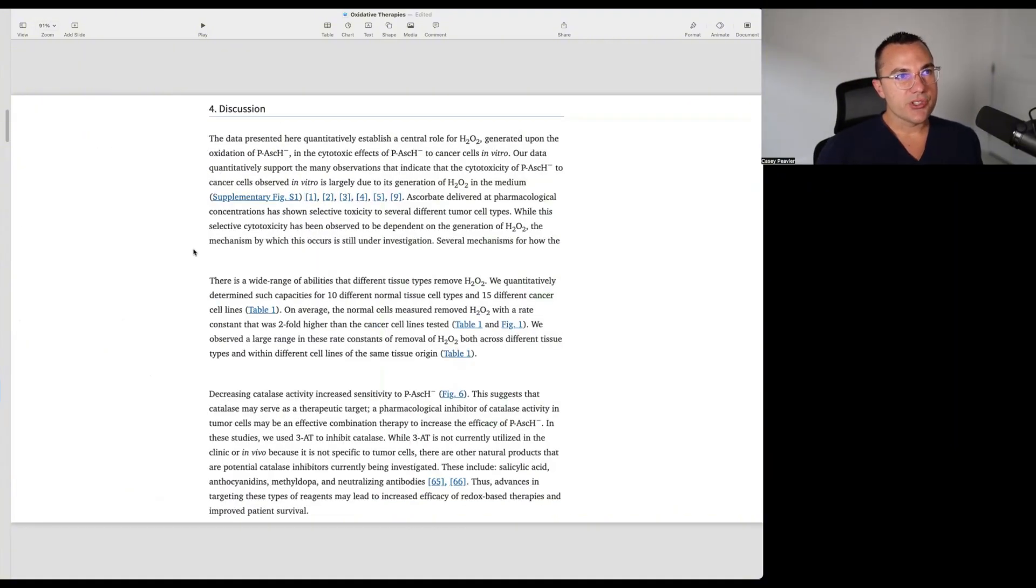Discussion. The data presented here quantitatively established the central role for hydrogen peroxide generated upon oxidation of ascorbic acid in the cytotoxic effects of ascorbic acid in cancer cells in vitro. Our data quantitatively support the many observations indicate that cytotoxicity of ascorbic acid to cancer cells observed in vitro is largely due to this generation of hydrogen peroxide in the medium. Ascorbate delivered at pharmacological concentrations has shown selective toxicity to several different tumor cell types. While this selective cytotoxicity has been observed to be dependent on the generation of hydrogen peroxide, the mechanism by which this occurs is still undergoing investigation. There is a wide range of abilities that different tissue types remove hydrogen peroxide. We quantitatively determined that such capacities for 10 different normal tissue cell types and 15 different cancer cell lines. On average, the normal cells measured removed hydrogen peroxide at a rate constant that was two-fold higher than the cancer cell lines tested.